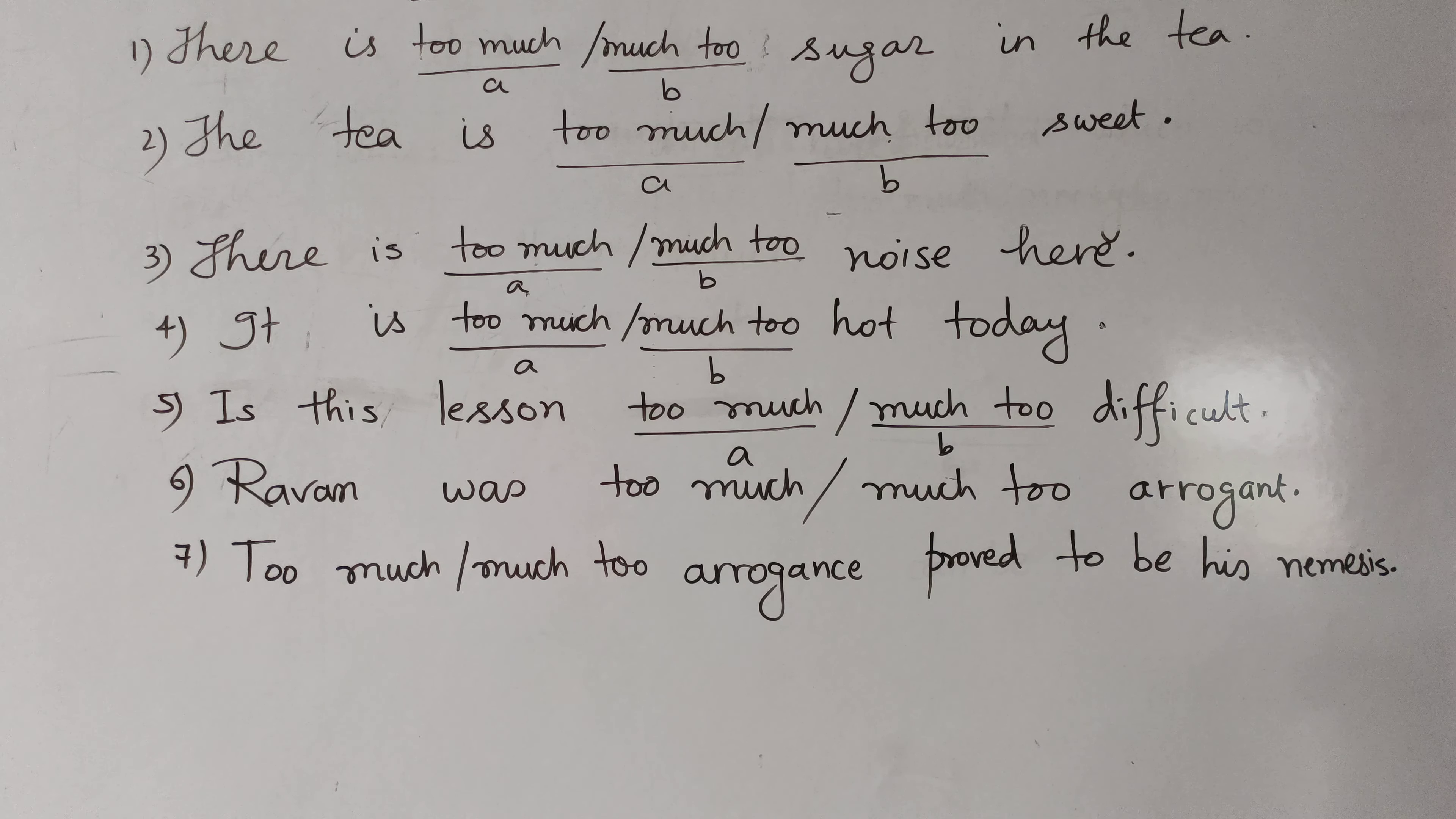So the rule is very simple. Much too is followed by an adjective, and too much is followed by a noun. I think you have benefited from this video. Get ready for the next video. If you haven't subscribed to our channel, please subscribe. Such interesting videos will keep coming to you. Thank you very much.